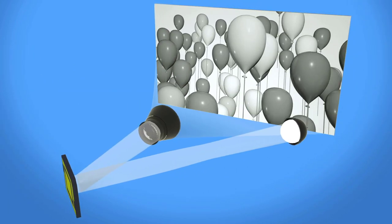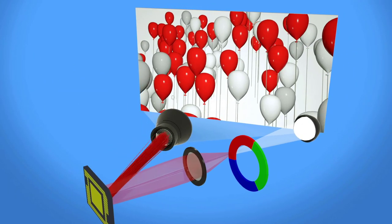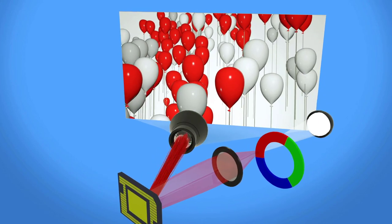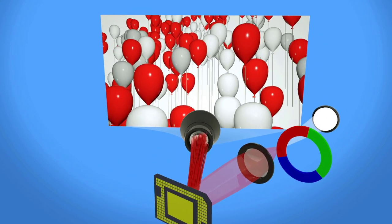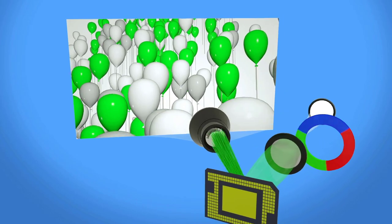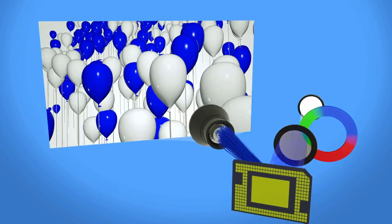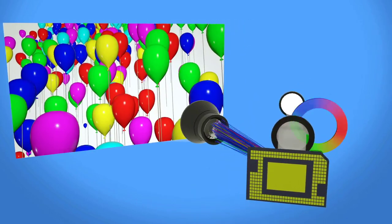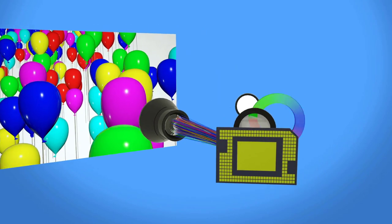In some systems, color is introduced by placing a color wheel between the light source and the DMD. As the color wheel spins, it focuses red, green, and blue light on the mirror array. When the timing of each mirror is synchronized with the wheel, a shade of color is displayed.